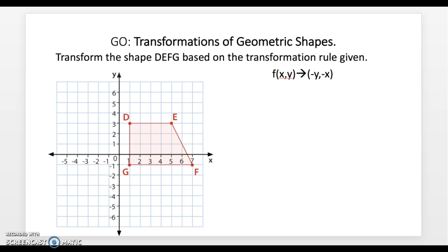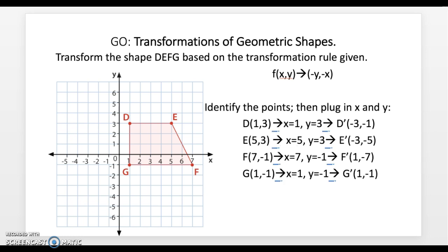You either could know what the rule means, but the easiest way to do this is to identify the points: 1, 3; 5, 3; 7, negative 1; and 1, negative 1. And then apply the rule. Take your x and y values and plug them into the equation. x equals 1, y equals 3. So if the rule is negative y, negative x, the new point is negative 3, negative 1, etc.